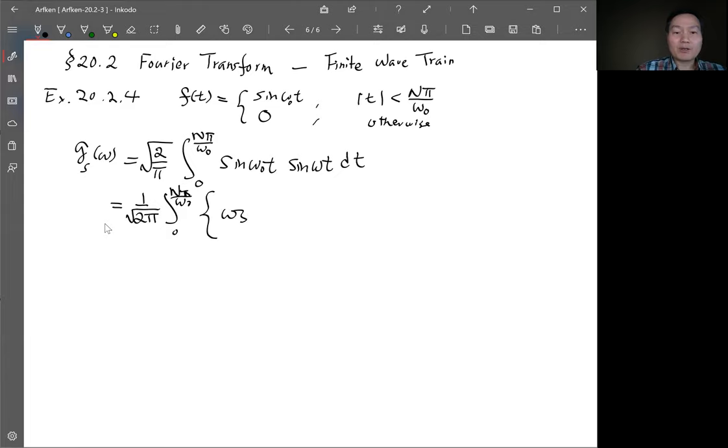And then there are two parts. One will be cosine of this minus that. So it's omega zero minus omega t minus cosine of omega zero plus omega t dt.